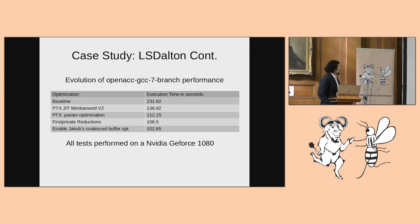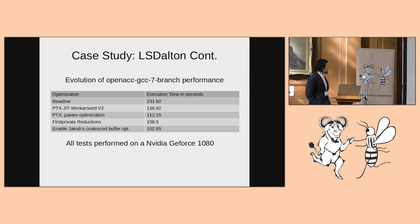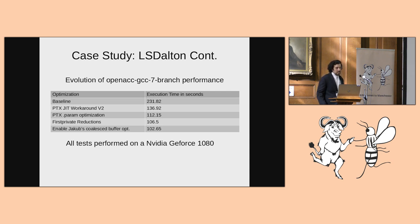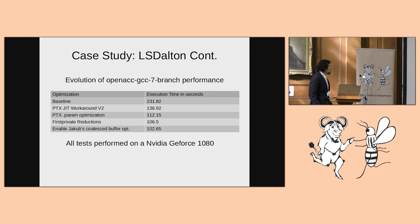Here are the performance numbers from the GCC 7 branch. Our baseline was about 231 seconds. After the PTX JIT workaround was corrected, we dropped to 136 seconds. With the PTX parameter optimization, down to 112 seconds. Changing the reduction to be first-private dropped it another 6 seconds, and Jacob's coalesced transfers reduced it down to 102 seconds. All tests were run on a GeForce 1080, which was a high-end desktop GPU at the time.